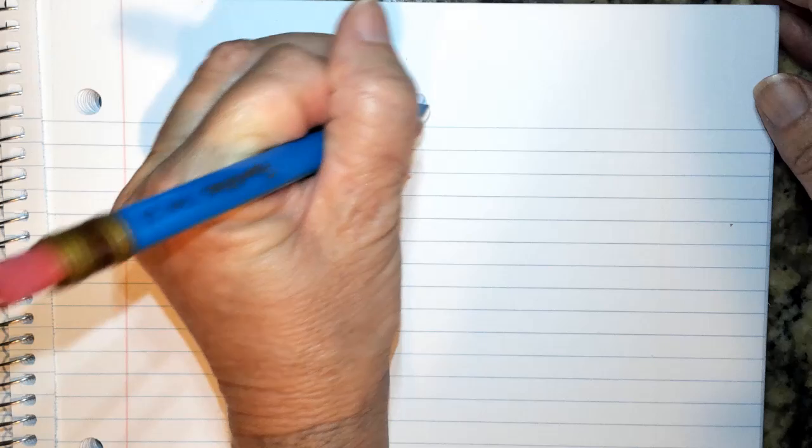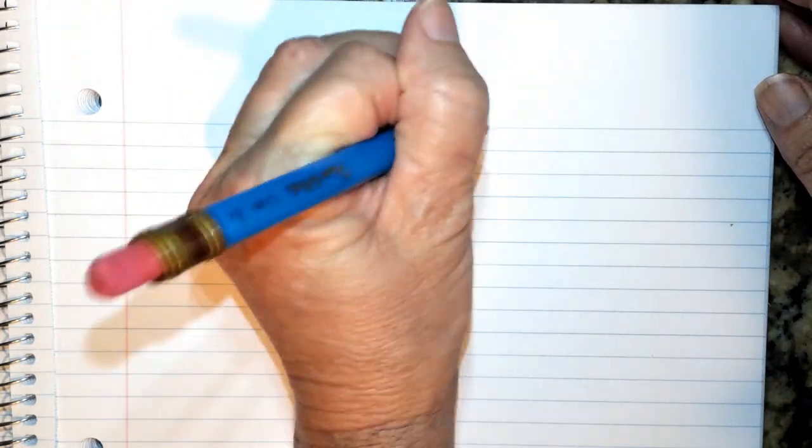So I'm in my journal on the next clean page and at the top I'm going to write the word perimeter. We're going to start these notes today but we'll come back to these notes later on in the year when we're talking about area and volume.